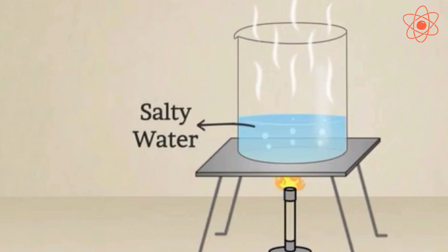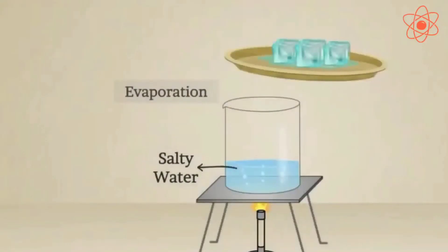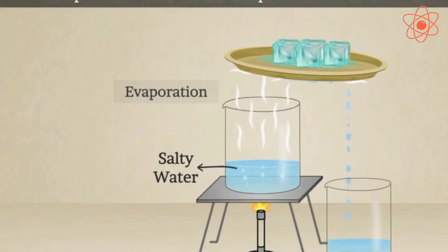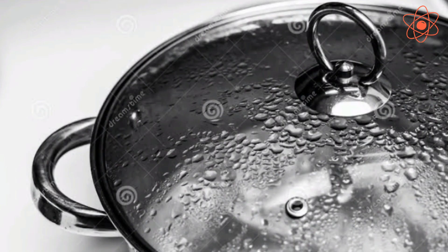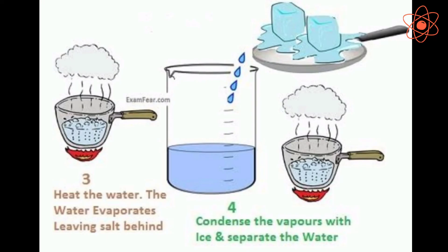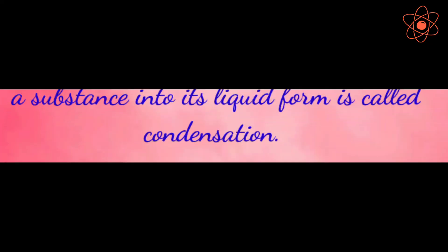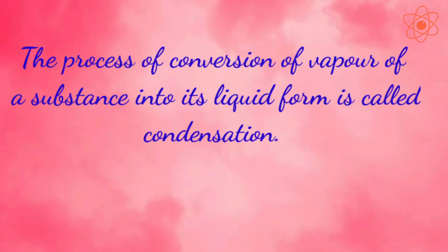To recover the liquid, we keep a steel lid over a pan of hot water for a minute and then lift it. You will observe water droplets on the inner surface of the plate. These are formed by the condensation of water vapour rising up from the hot water. Thus, the process of conversion of vapour of a substance into its liquid form is called condensation.